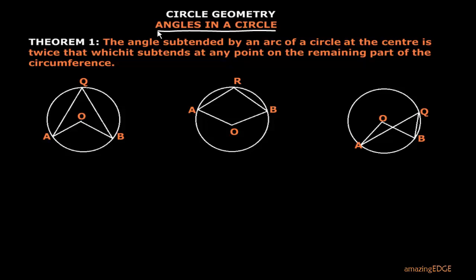We're going to explain this theorem using these diagrams. You have an arc — let's say this is arc AB. An angle is formed when two lines intersect. You can see that the lines forming an angle at this point on the circumference meet at point Q. These two lines come from arc AB to meet at point Q, forming an angle subtended by arc AB.